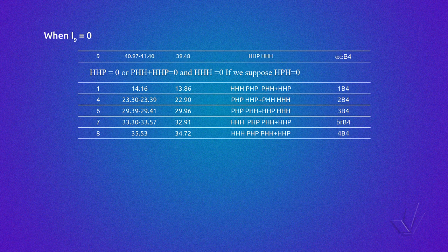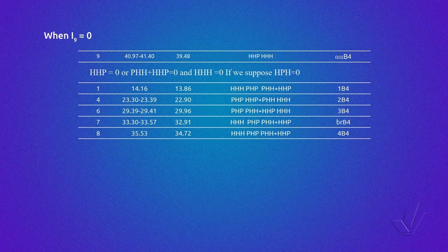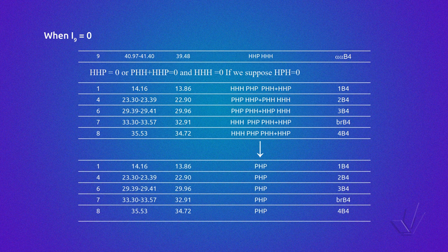The second case is when peak 9 is equal to zero, so triads HHH and HHP are equal to zero. As normally if HHP is not present, PHH is not present either, so PHH plus HHP equals zero. If we suppose that HPH is also not present, the table can be simplified and the triad PHP can be determined using the average of peaks 1, 4, 6, 7 and 8. When we have several peaks that represent the same triad, as in this case the triad PHP, we can use just one of these peaks or more. Normally, when we use more peaks and take the average of them, we minimize the integral error, which is sometimes significant.